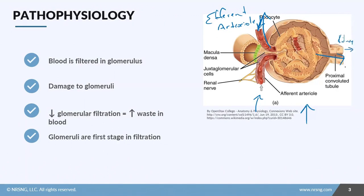Blood comes in, filters out, goes to the kidneys. Well if you have damage to the glomeruli, what ends up happening is that the waste products aren't being filtered out. So you have a decrease in glomerular filtration, you have this increased waste in blood, so you'll see elevations in the BUN and the creatinine.